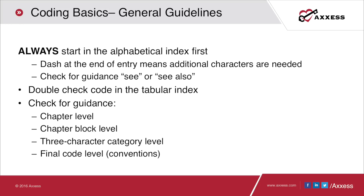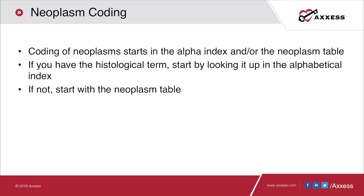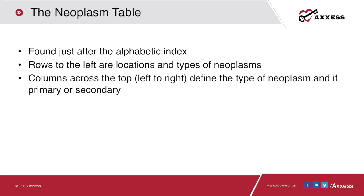For neoplasm codes, coding starts in the alphabetic index and/or the neoplasm table. If you have a histological term for the neoplasm, start with the alphabetical index. If you don't have a histological term, start with the neoplasm table, which is found just after the alphabetic index. On the neoplasm table, the rows on the left are the locations and types of neoplasms such as bone or specific organs, and the columns across the top define the type of neoplasm — whether it's a primary or secondary site, benign, in situ, and so on.